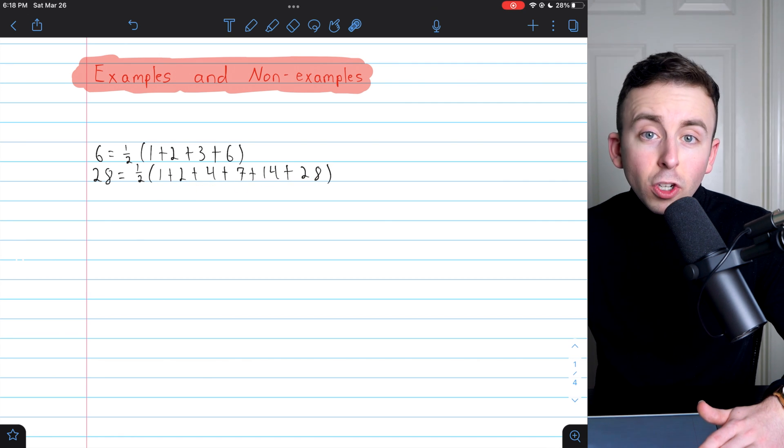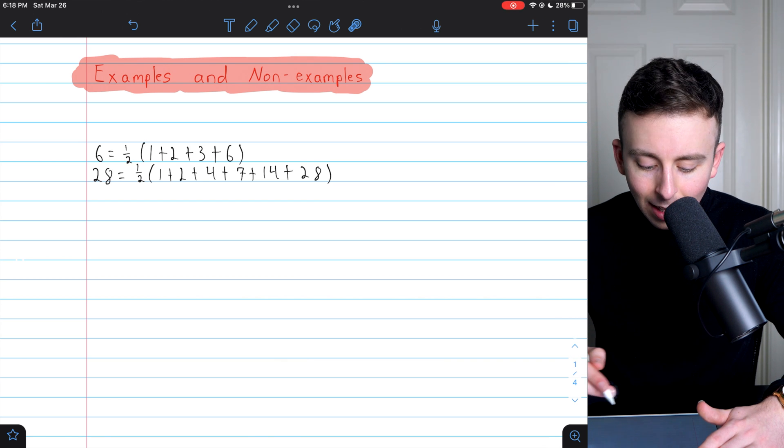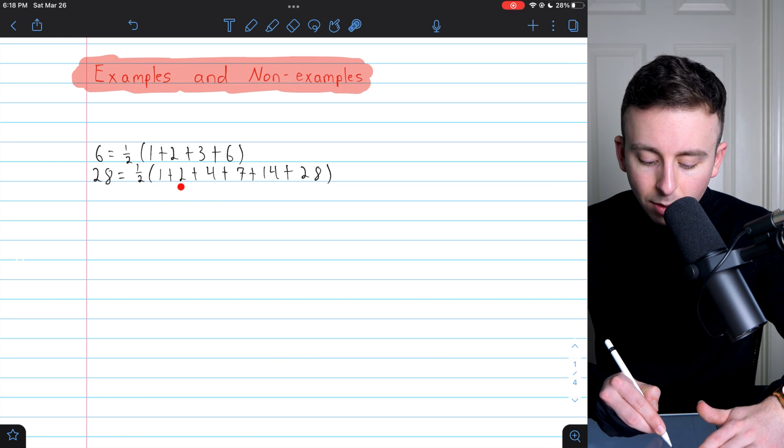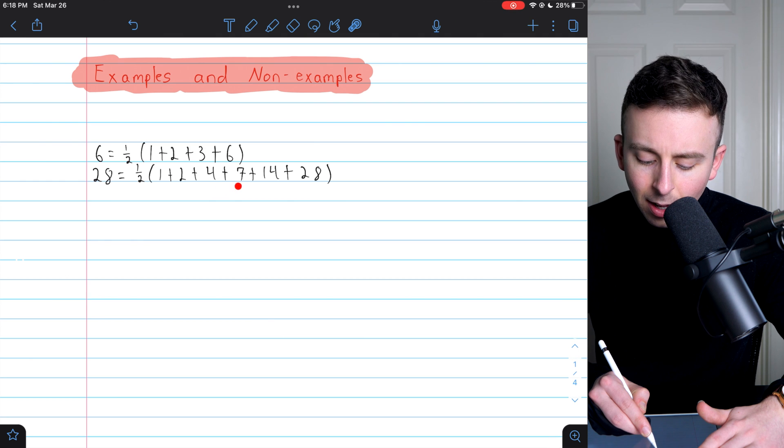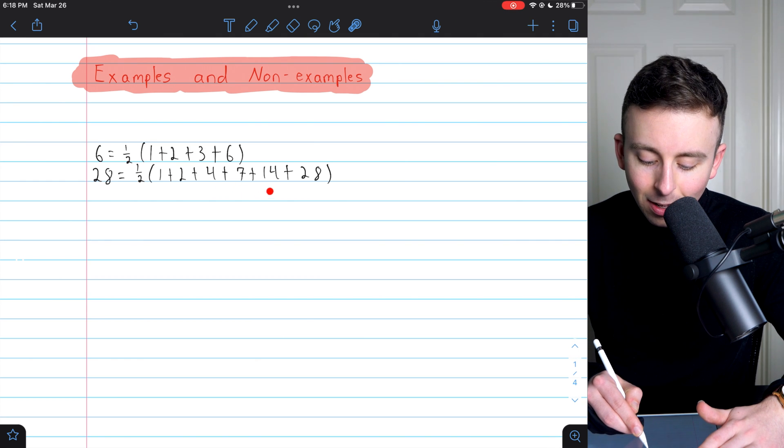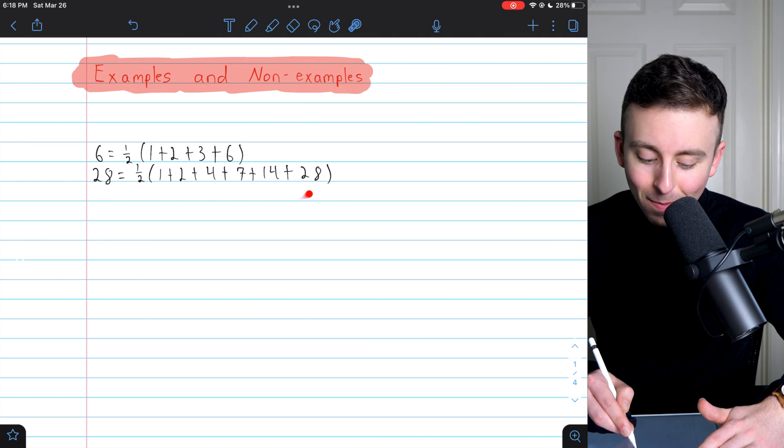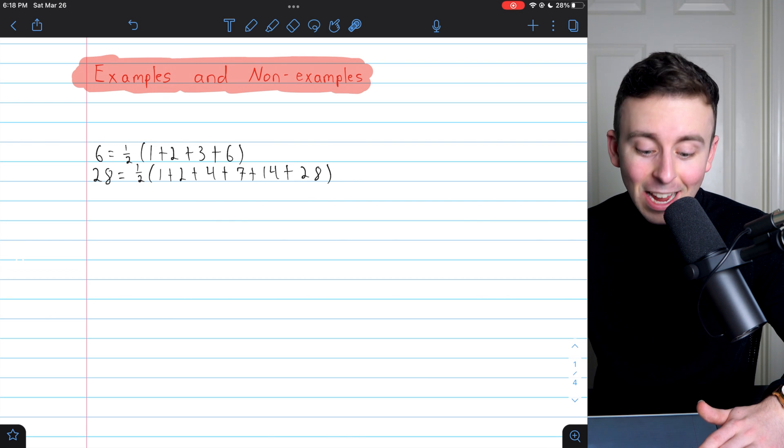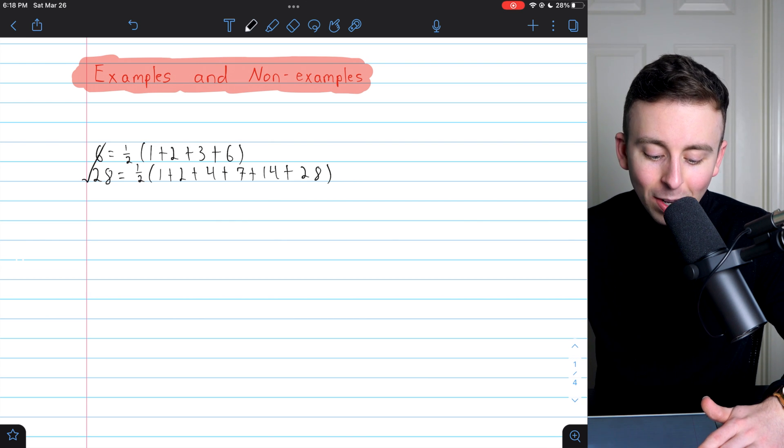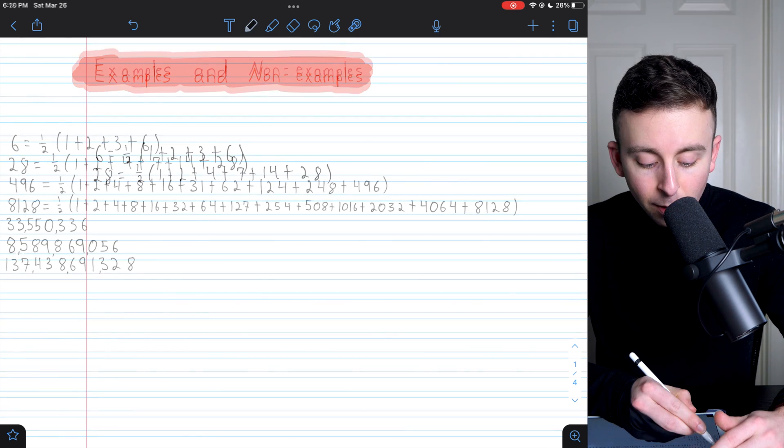So if we add these things together, all of these divisors, we should get 56. Let's see. 1 plus 2 is 3. Plus 4 is 7. Plus 7 is 14. Plus 14 is 28. Plus 28 is 56. It works. Look at that. 28 is perfect.